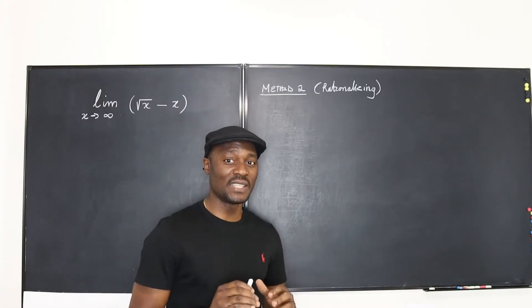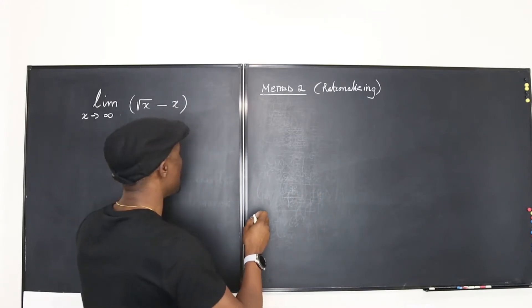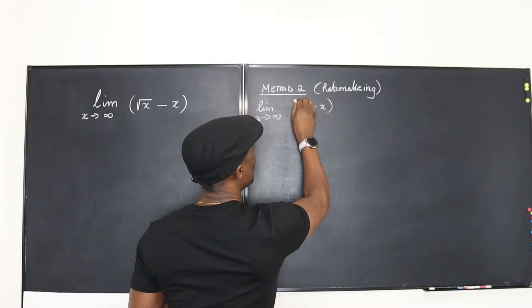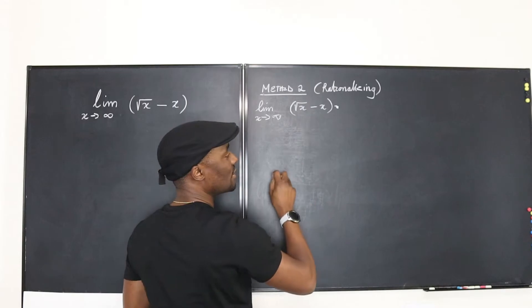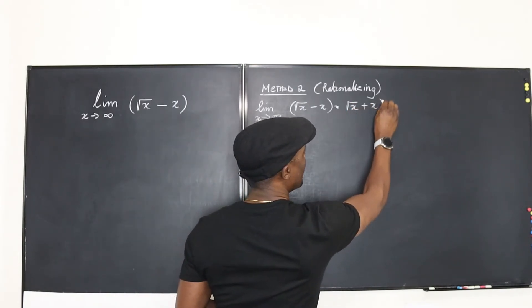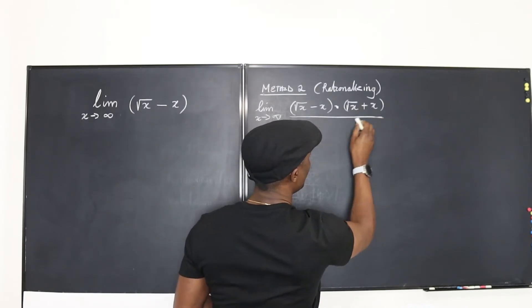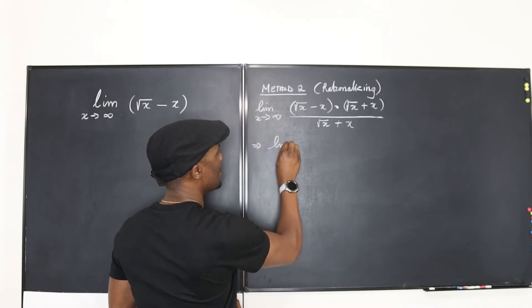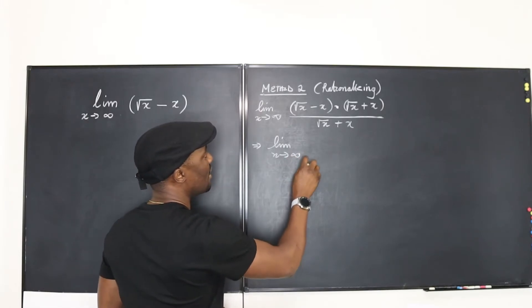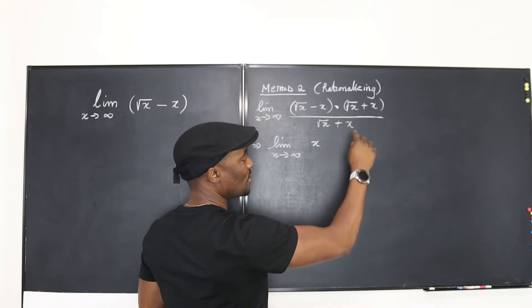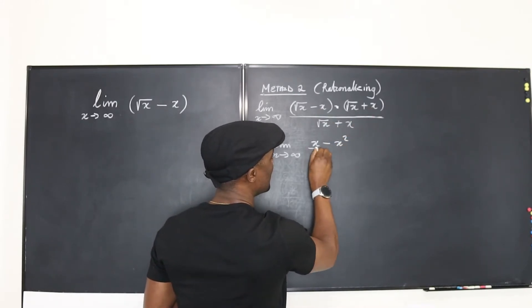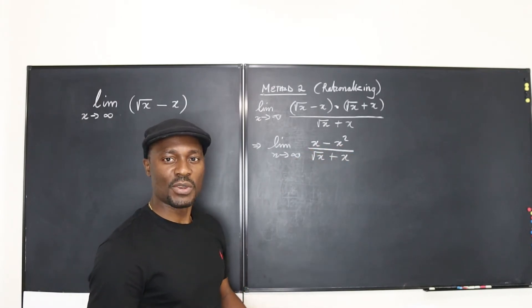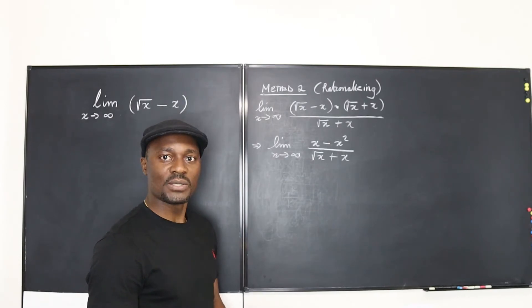The second method is rationalizing the expression. We have the limit as x goes to infinity of square root of x minus x. I'm going to multiply by the conjugate of this expression, which is square root of x plus x, and also divide by square root of x plus x — so I haven't changed anything. Multiplying the top gives us: the limit as x goes to infinity of x minus x squared, all over square root of x plus x.